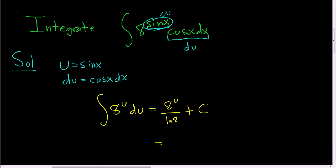All we have to do now is replace u with sine x. So this is 8 to the sine x over the natural log of 8 plus a constant. And that's it.